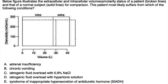The answer choices are: A. Adrenal insufficiency. B. Chronic vomiting. C. Iatrogenic fluid overload with 0.9% NaCl. D. Iatrogenic fluid overload with hypertonic solution. Or E. Syndrome of inappropriate hypersecretion of antidiuretic hormone, SIADH.